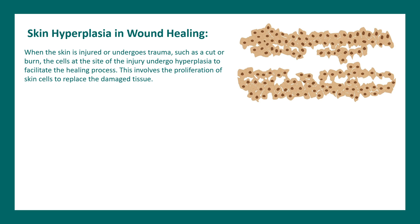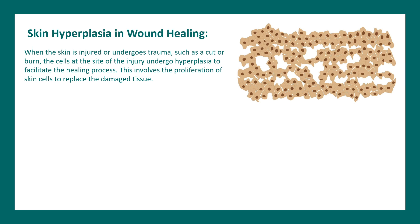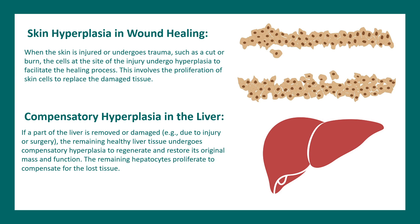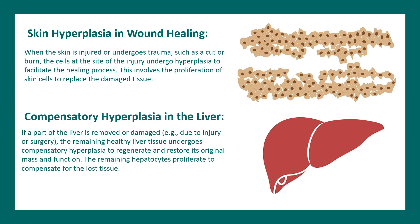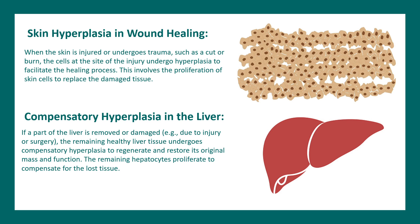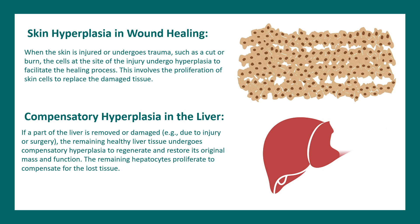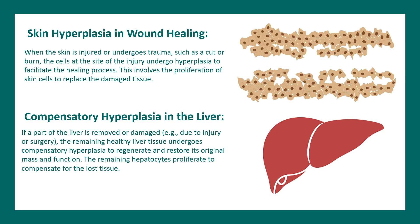Other examples include wound healing, where more and more cells are added to the injury site to compensate. There could also be compensatory hyperplasia of an entire organ — for example, liver injury from infection or surgery — but given enough time, the entire liver can regenerate through this process.